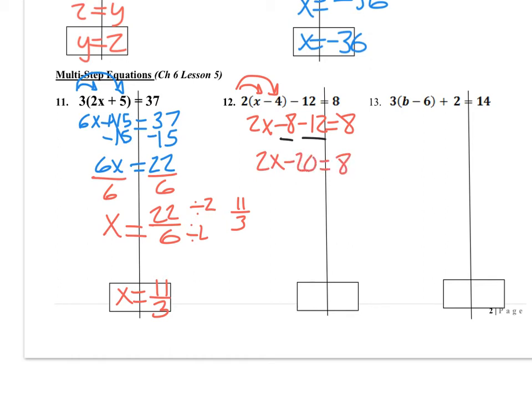Now I have a two-step problem. Add 20 to both sides, and 2x will equal 28. To finish, divide by 2 on both sides of the equation, and x will equal 14. And that's what I'd write in my box, x equals 14.